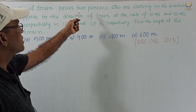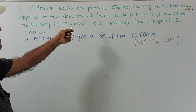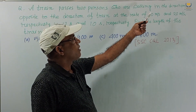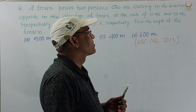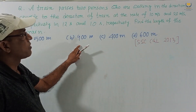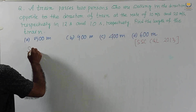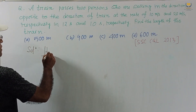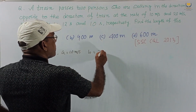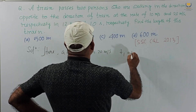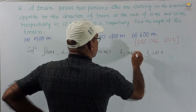Another problem of the same train type: a train passes two persons who are walking in the direction opposite to the train, at the rate of 10 meters per second and 20 meters per second respectively, in 12 seconds and 10 seconds respectively. Find the length of the train. Options given: 500 m, 900 m, 400 m, 600 m. This was set in SSC CGL 2013. Given: A equals 10 m/s, B equals 20 m/s, t1 equals 12 seconds, t2 equals 10 seconds.